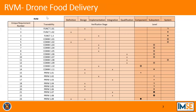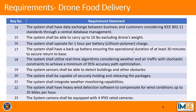Here you can see the developed RVM for the drone food delivery project. All requirements have a traceability ID based on functionality, communication, and performance. For example, for requirement number 17: the system shall have a backup battery ensuring the operational duration of at least 30 minutes to secure return to base.